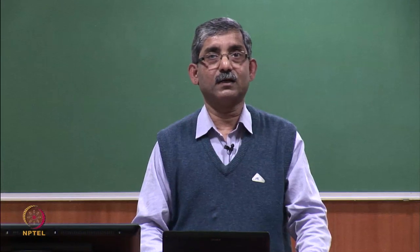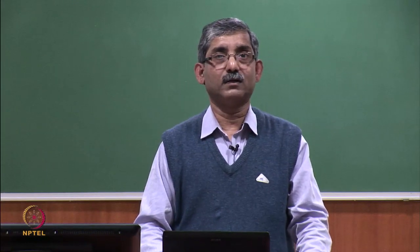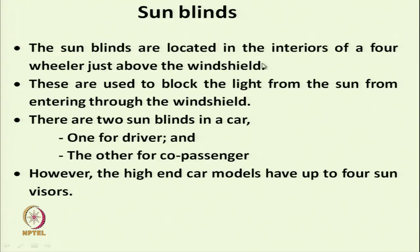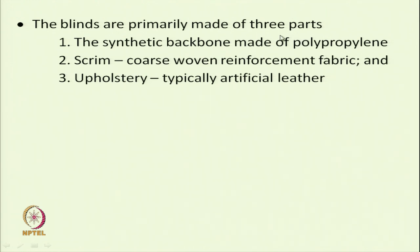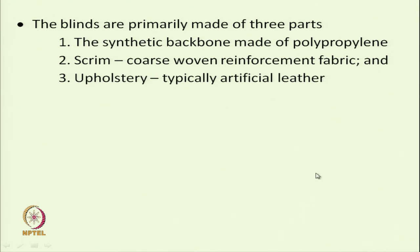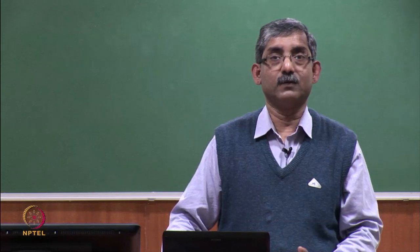Sun blinds are another technical product located in the interior of a four-wheeler just above the windshield, used to block sunlight. Textile materials are also used here. Blinds are typically made of three parts: the synthetic backbone made of polypropylene, coarse woven reinforced fabric for the screen, and upholstery typically uses artificial leathers where textile components are also used.